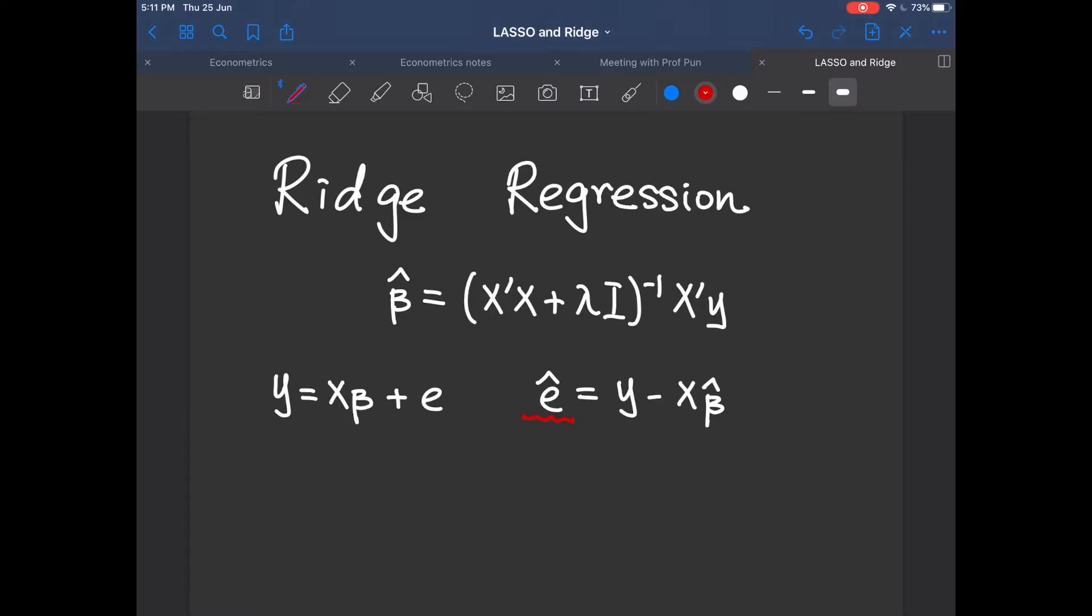So that's the same for beta hat. So you can write the objective function of the ordinary least square case as y minus x beta hat transpose multiply y minus x beta hat. And we want to minimize this objective function with respect to beta hat.